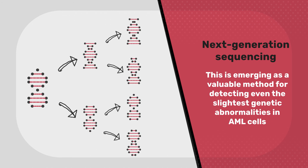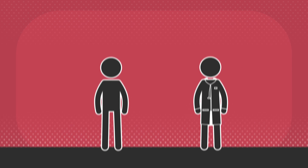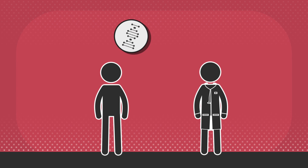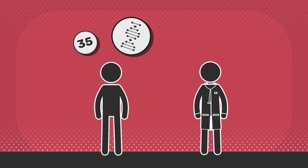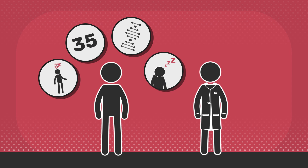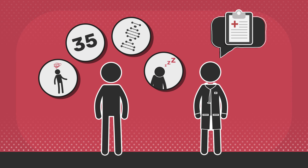Another test, called next generation sequencing, is emerging as a valuable method for detecting even the slightest genetic abnormalities in AML cells. Information about specific abnormalities in leukaemia cells, as well as patient age and other existing health conditions, can help doctors decide the treatments that are right for a patient with AML.